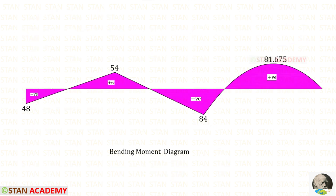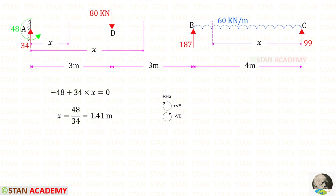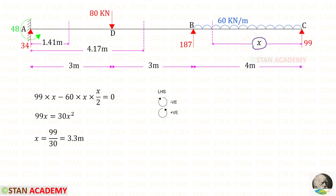This is the complete bending moment diagram. If we flip this diagram, that is called the bending moment diagram on the tension side. At three points the bending moment becomes 0; these are the points of contraflexure. We make sections at these three points to find the distances. Using the right-hand side rule for the first point, we get 1.41 m. For the second distance x, again using the right-hand side rule, we get 4.17 m. For the third distance x, using the left-hand side rule, we get 3.3 meters.